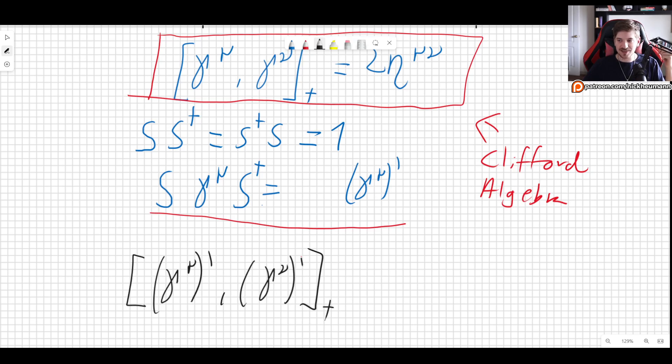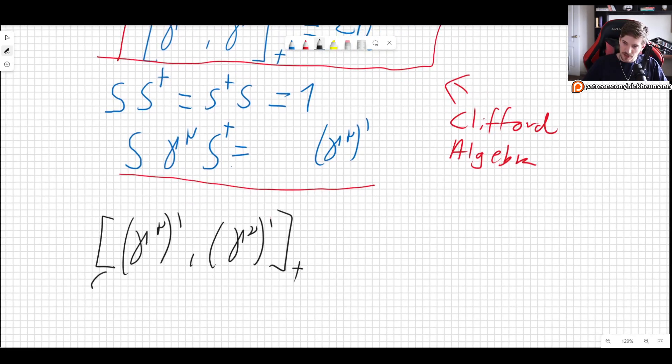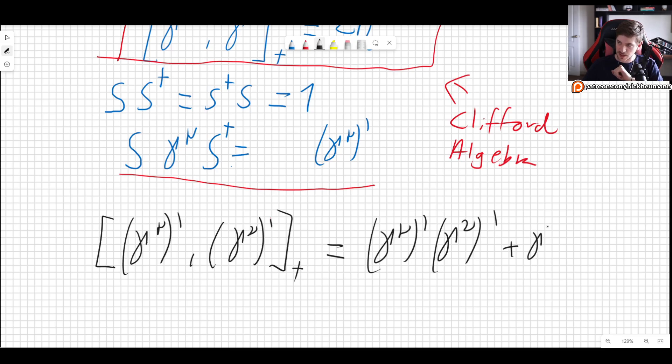And this is, of course, the anticommutator. Some people write this with these curly brackets. I don't like to do that because you can get confused with the Poisson bracket, but it's notation. It doesn't matter. So let's here just write first multiply through.